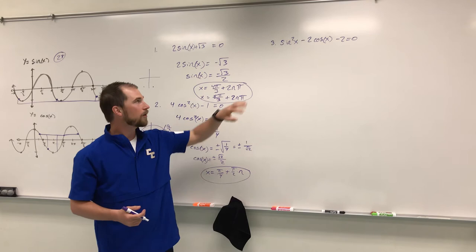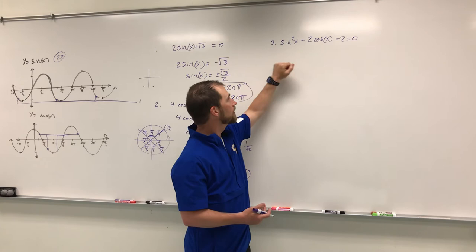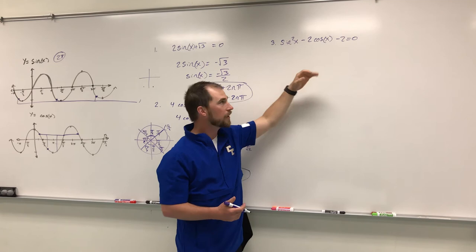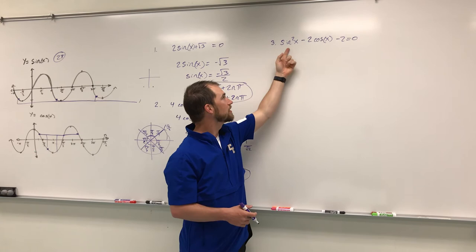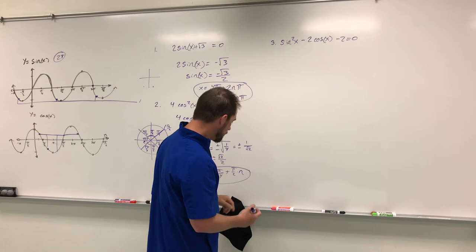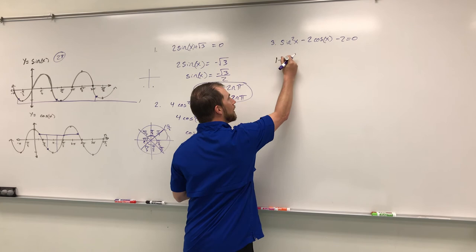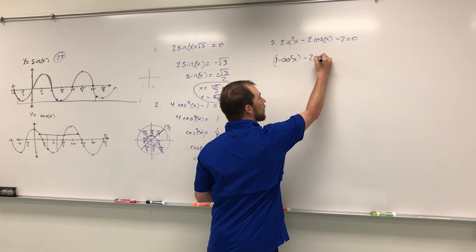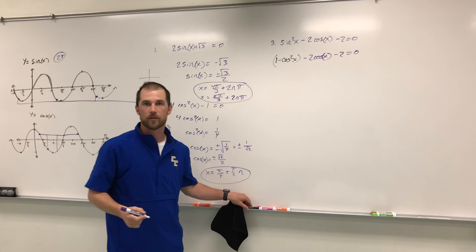The final problem is the most complicated: sine squared x minus two cosine x minus two equals zero. We notice we have both sine and cosine, and it looks like a factoring problem. But to factor, we need sine and cosine to match up. We use our Pythagorean identity: sine squared x equals one minus cosine squared x. Substituting: one minus cosine squared x, minus two cosine x, minus two equals zero.